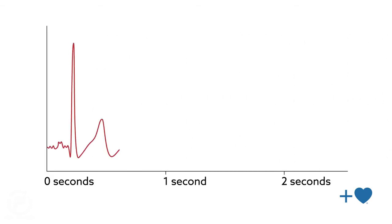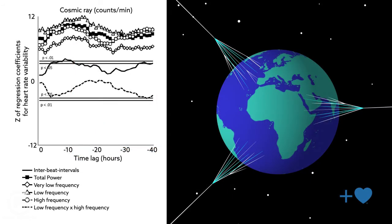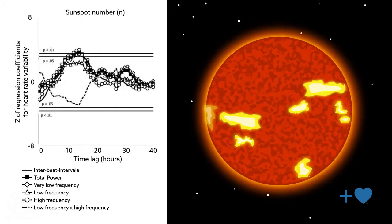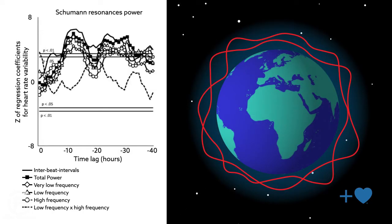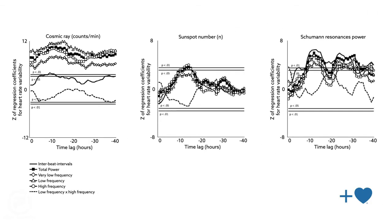The team found that heart rate variability significantly correlated to variations in three key variables: cosmic rays, solar activity, and human resonances. Strikingly, the participants' heart rate variability rose in response to increases in these variables, and the response was quite rapid.